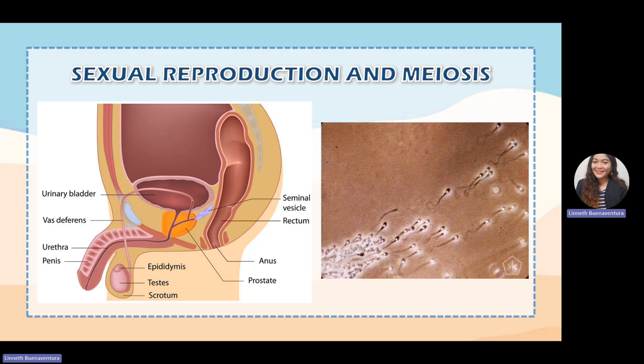During ejaculation, the seminal vesicle releases fluids that help the sperm survive in the female reproductive organ during intercourse. The seminal fluid then passes through the urethra and goes through the penis. Those are the parts and some essential functions of the male reproductive organ.